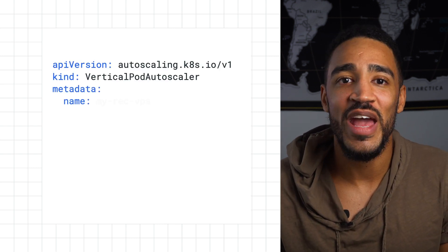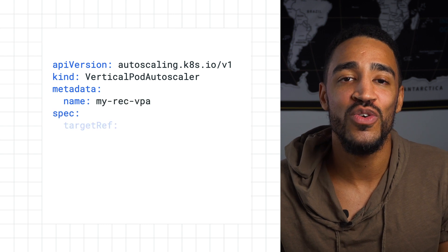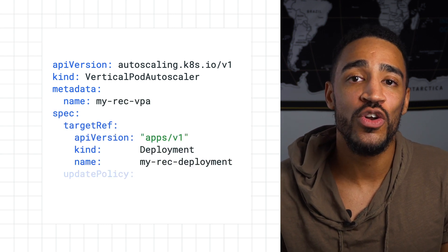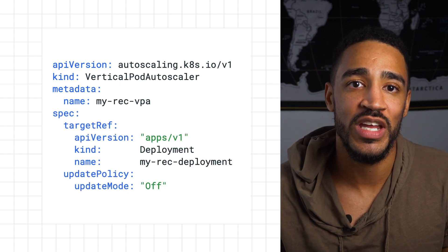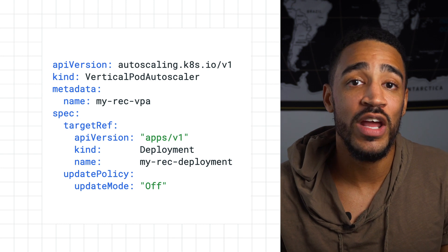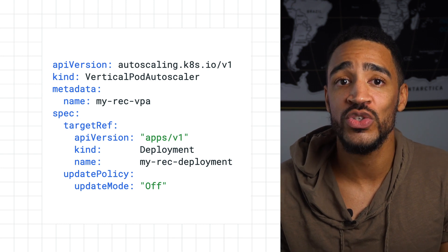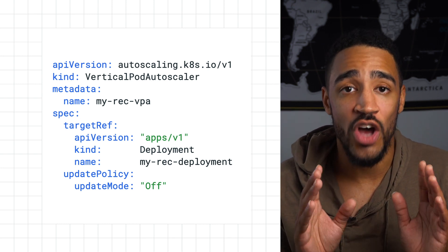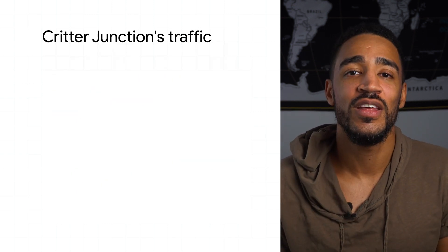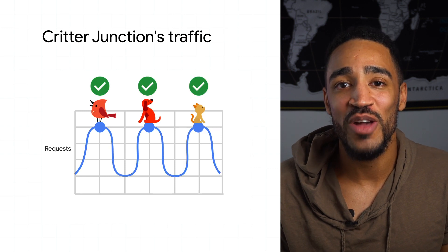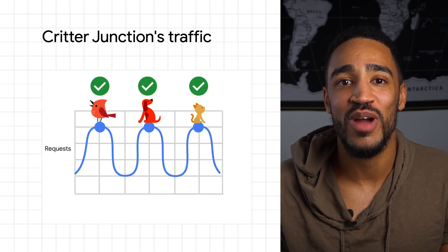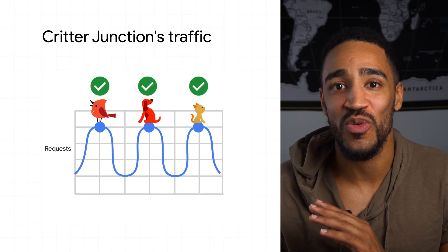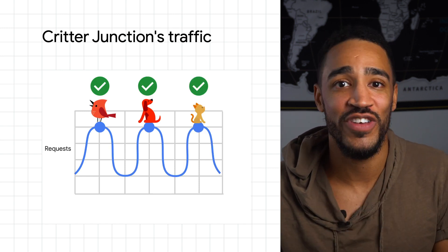Then, to get a good baseline for CPU and memory resources, we used Vertical Pod Autoscaler's sizing recommendations by creating a Vertical Pod Autoscaler whose update mode was set to off. Finally, we updated the deployment to account for these recommendations, and Critter Junction was able to run a lot more efficiently.